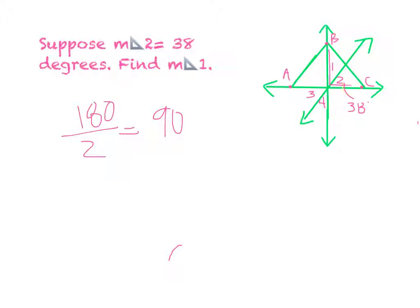So this right triangle equals 90, which all right triangles equal 90. But now we are going to subtract 38 from 90.